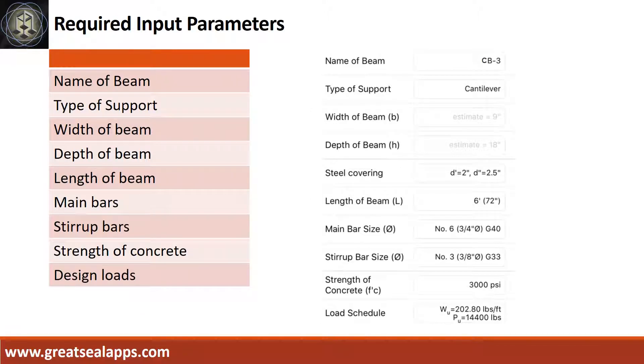Enumerate input parameters required. Name of beam, CB3. Type of support, cantilever. Width of beam, 9 inches. Depth of beam, 18 inches. Length of beam, 6 feet. Main bars, 3/4 inch diameter at grade 40. Stirrup bars, 3/8 inch diameter at grade 33. Strength of concrete, 3,000 psi.